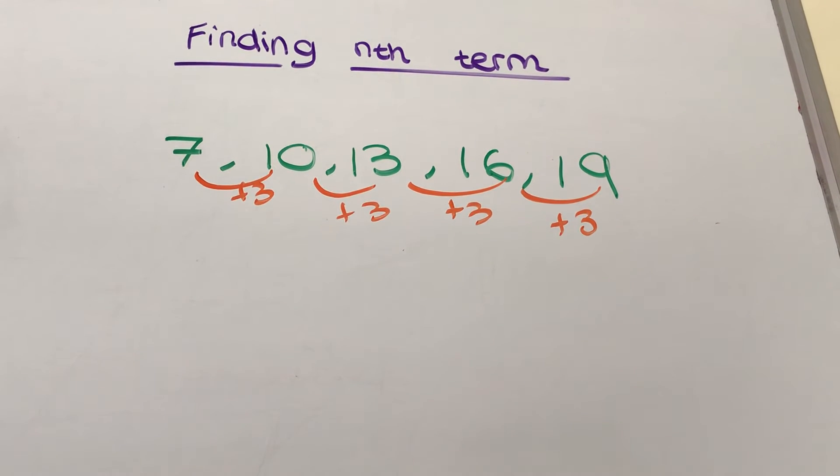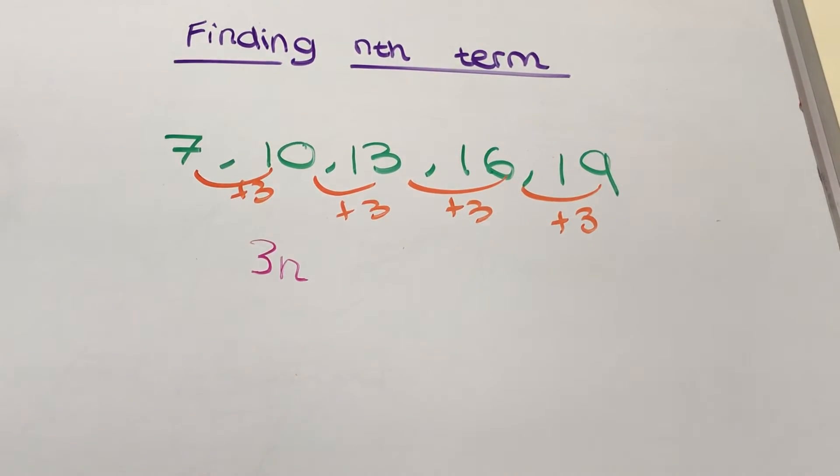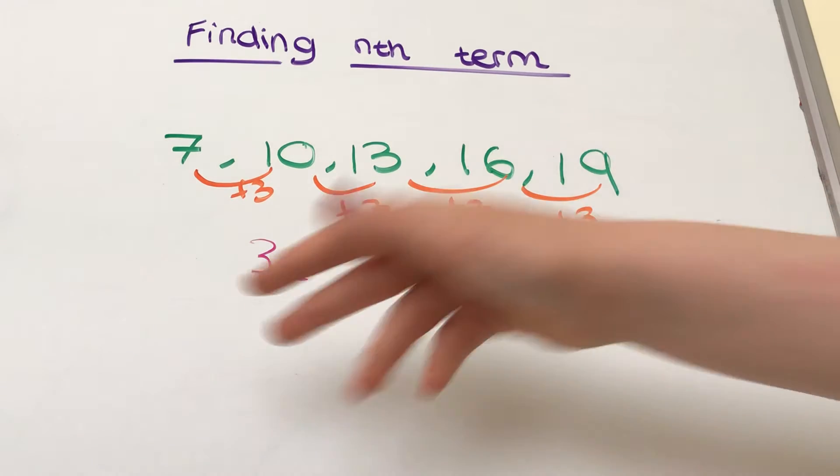So that means the beginning of the nth term is going to be 3n. Why is it going to be 3n? Well, because we're using the nth term, so we use the letter n—that's part of the formula—and then because we're going up in 3's, it's going to be 3n.